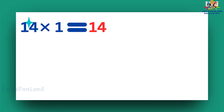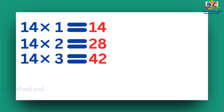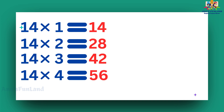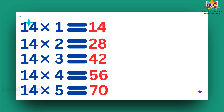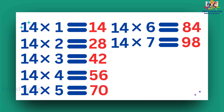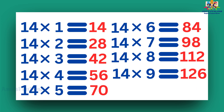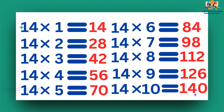14 ones are 14. 14 twos are 28. 14 threes are 42. 14 fours are 56. 14 fives are 70. 14 sixes are 84. 14 sevens are 98. 14 eights are 112. 14 nines are 126. 14 tens are 140.